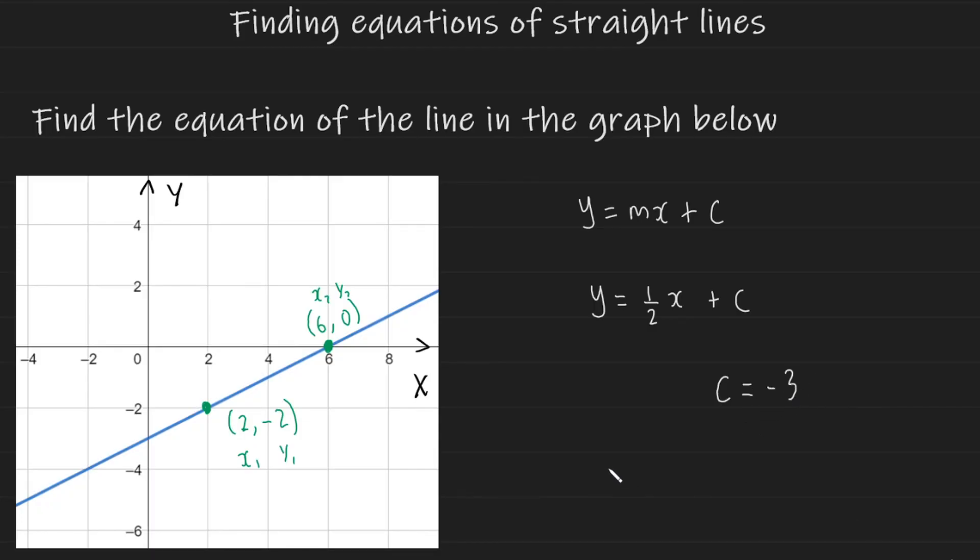Now we can write our full equation of this line, which is y equals a half of x minus 3. And there you have it. This is how you find equations of straight lines using coordinates and graphs.